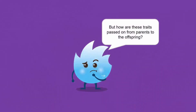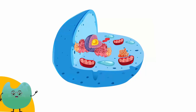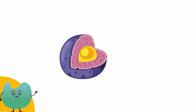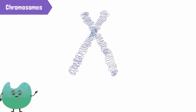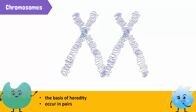But how are these traits passed on from parents to the offspring? Good question. The answer lies in the nucleus of each cell in our body. The nucleus contains thread-like structures called chromosomes. Chromosomes are the basis of heredity and occur in pairs. In each pair, one chromosome comes from the father, while the other comes from the mother.